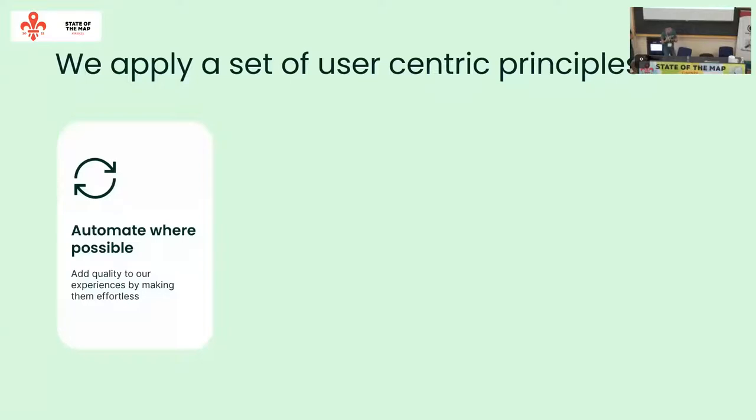Before we even start designing, we want to establish a set of design principles so that the designs we create are considered across products and help us make informed decisions, because it's not just one person designing. The first principle is automate where possible — add quality to experiences by making them effortless. Often, we think about design as creating an icon, making it pretty, adding features. But the most difficult thing is: how do you actually create value? Make what you want invisible. Make it effortless. Do less. Make it more efficient. That is a daunting task.